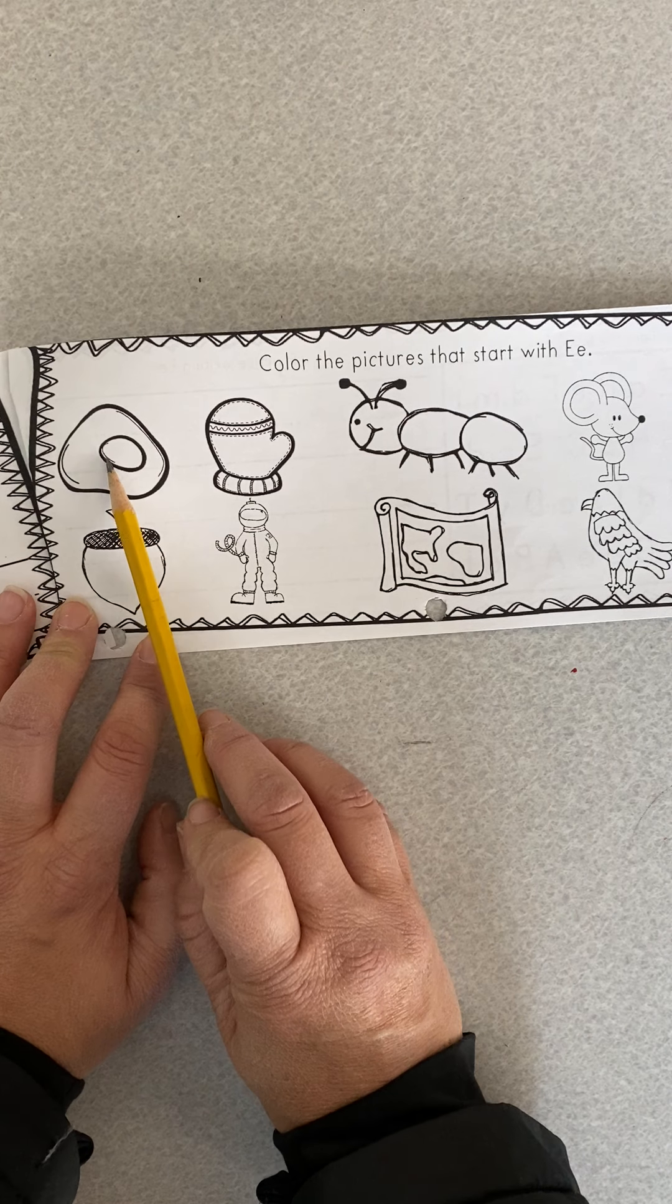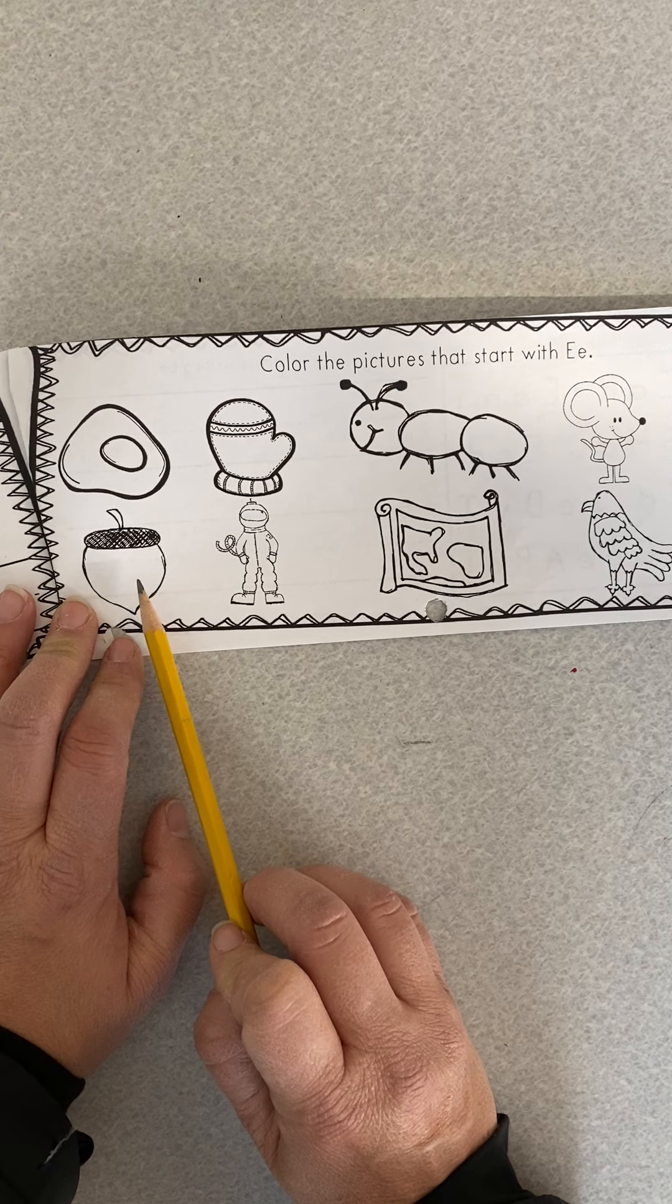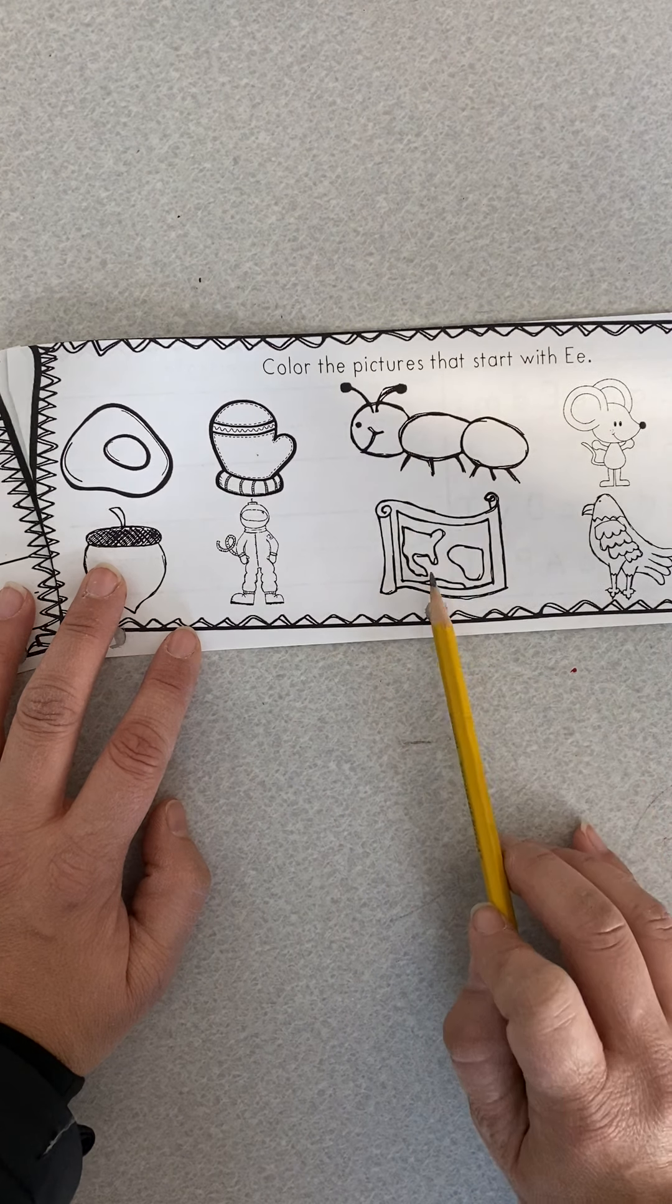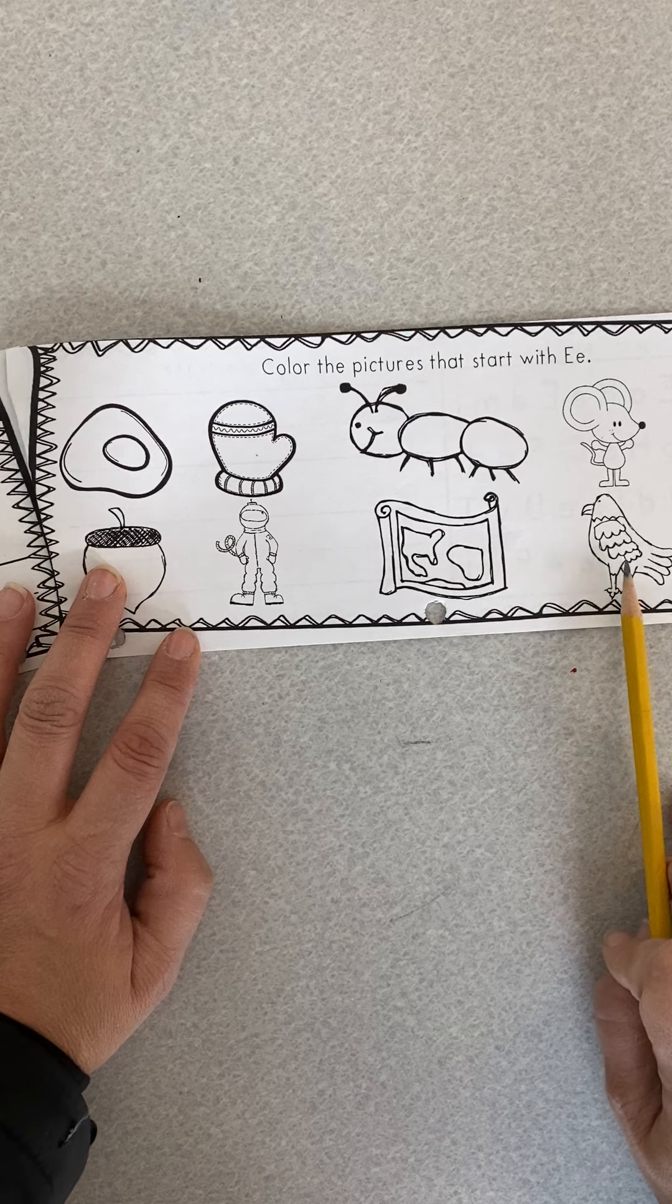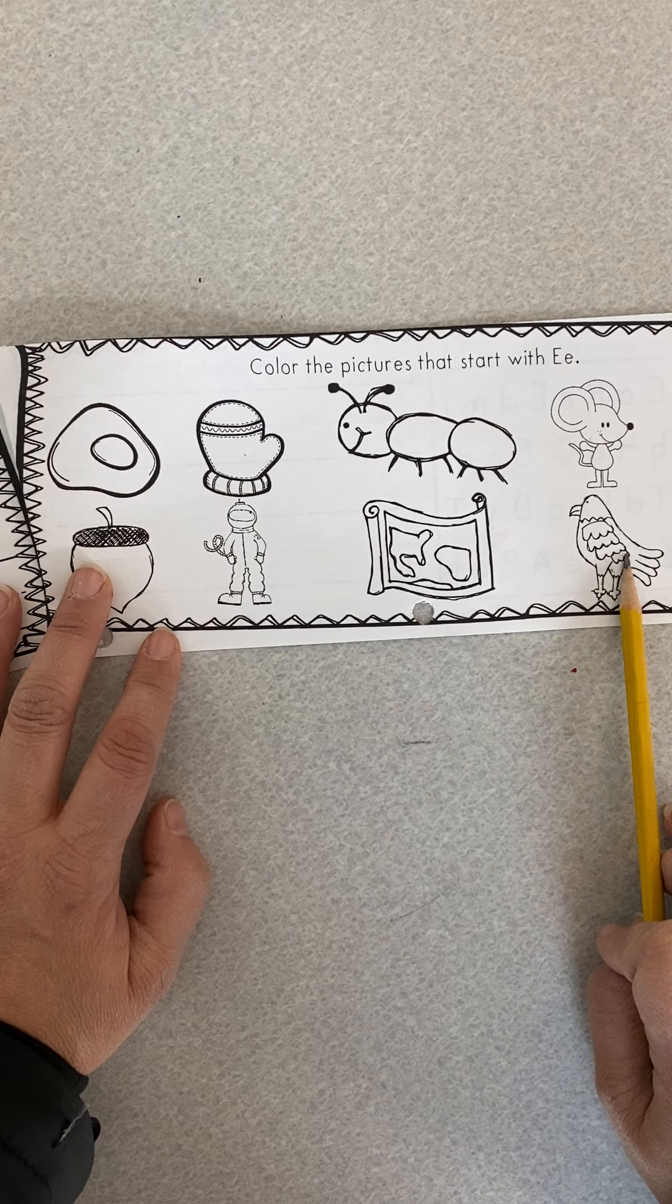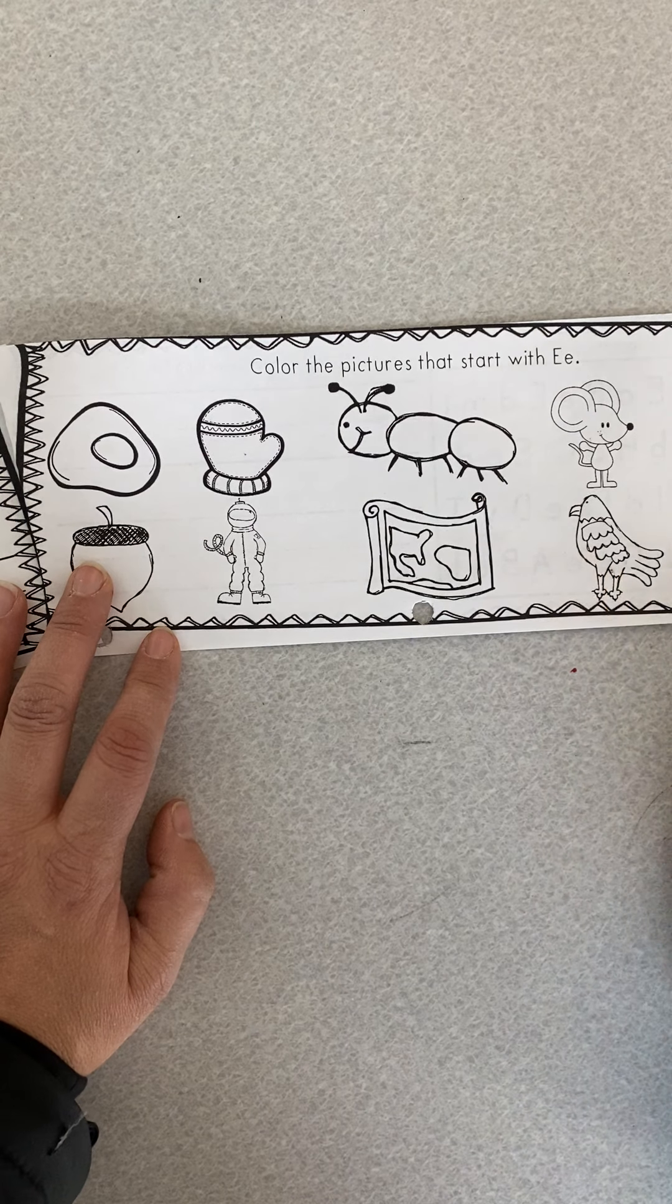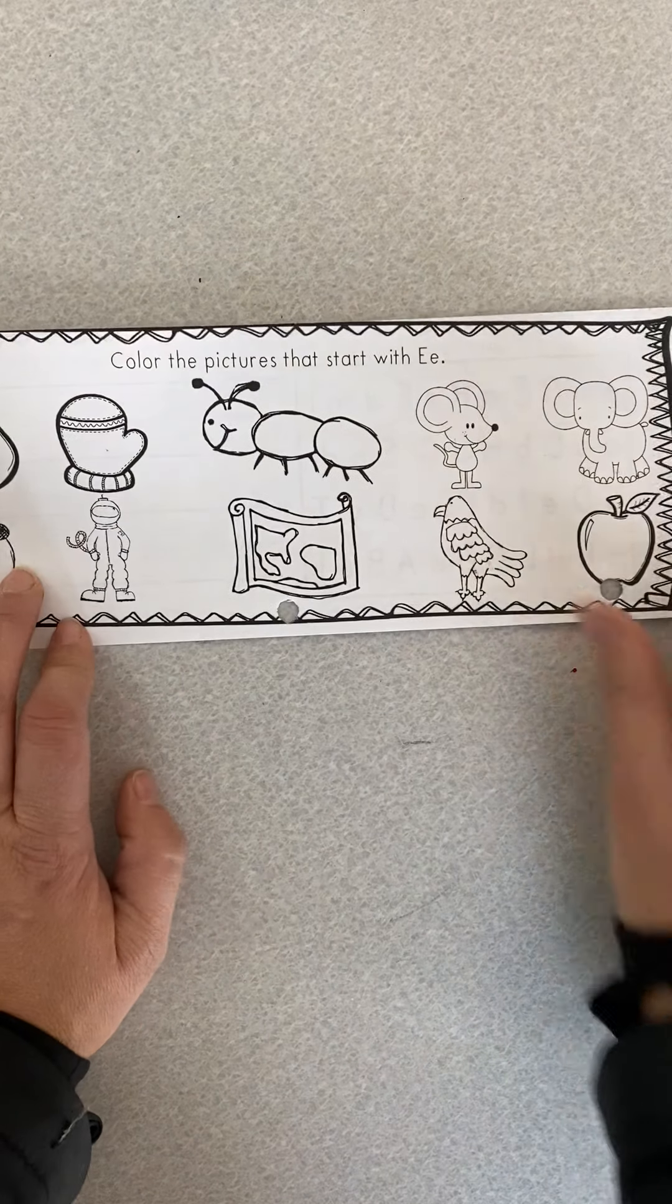So we have egg. This is acorn. It starts with an A, not an eh. Mitten. Astronaut. Ant. Map. Mouse. Eagle. This is our tricky one. It starts with the letter E. It says eagle. So you're going to color it even though it doesn't start with an eh. It's eagle. We're going to color it. Elephant and apple.